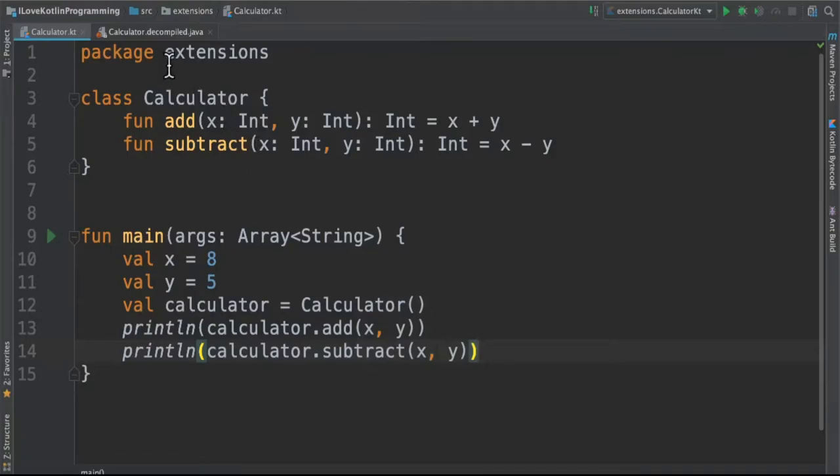For example, I have a class called calculator with two methods, add and subtract. From the main method, I'm going to create a calculator object, then call add and subtract methods. Everything is fine.